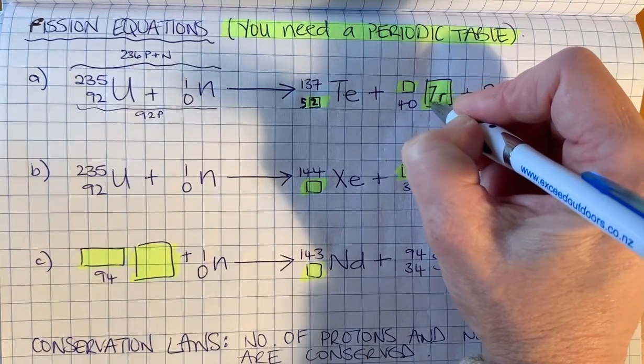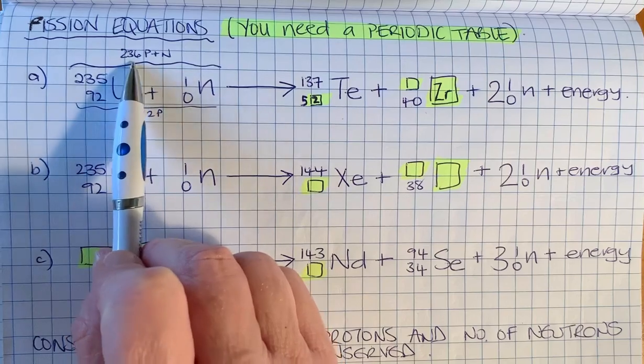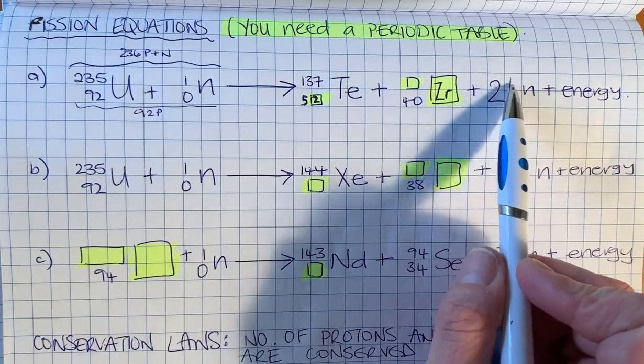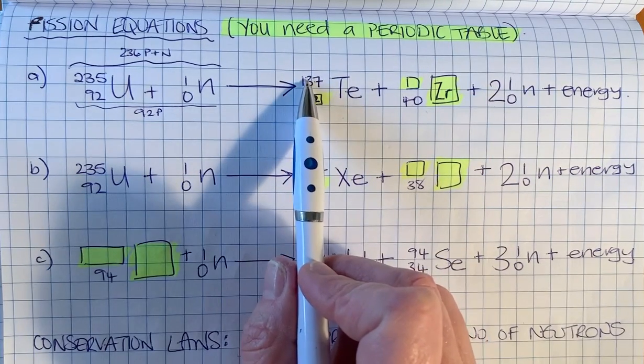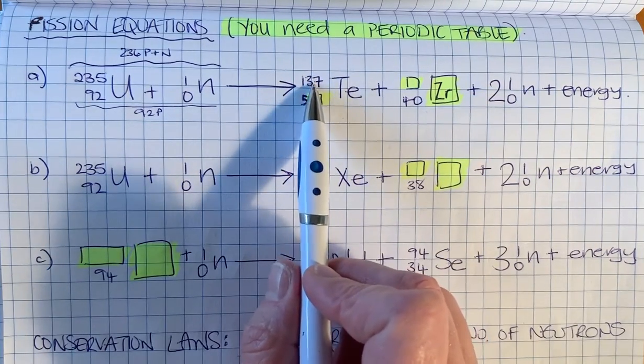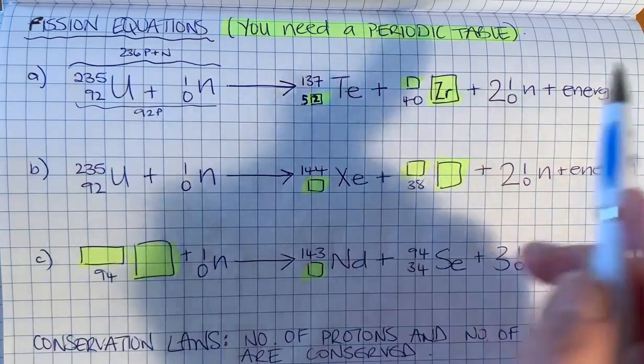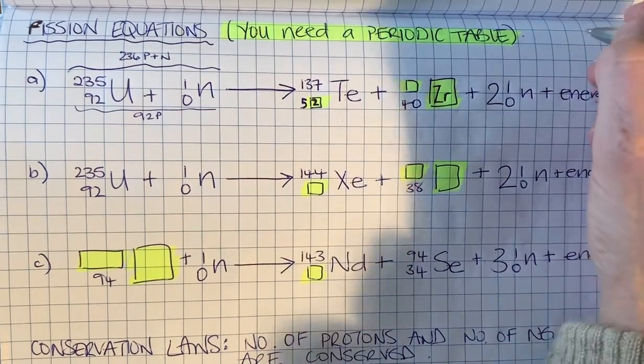For zirconium, we need to get a total of 236. At the moment we've got two neutrons here and 137 protons and neutrons here, but we need to reach 236. We've got 139, so I'm just going to calculate that here.